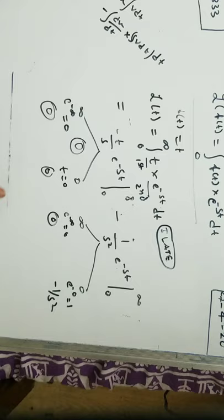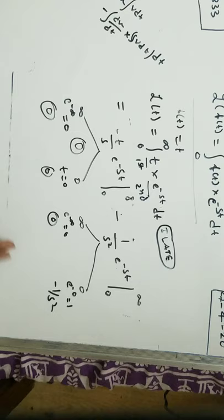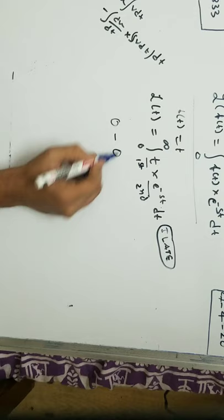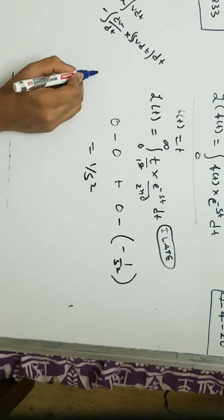Now our whole Laplace function, which gave us a relation here, has been simplified to this form. By writing it down, we get 0 minus 0 for the first term, plus 0 minus 1 by s squared, that equals 1 by s squared. So Laplace function of t is 1 by s squared.